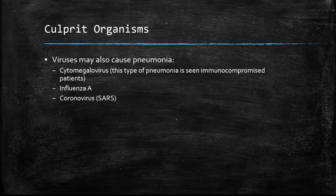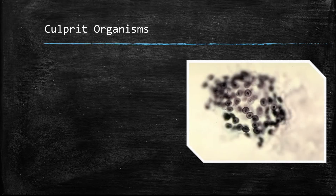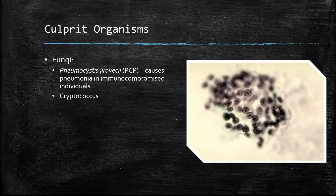Viruses can also cause pneumonia, including CMV, influenza, the coronavirus, SARS virus, and the Middle Eastern respiratory syndrome virus. Here is a picture of PCP — Pneumocystis jirovecii pneumonia — which occurs quite commonly in immunocompromised patients such as those with HIV. Pseudomonas is another fungi which can also cause pneumonia.